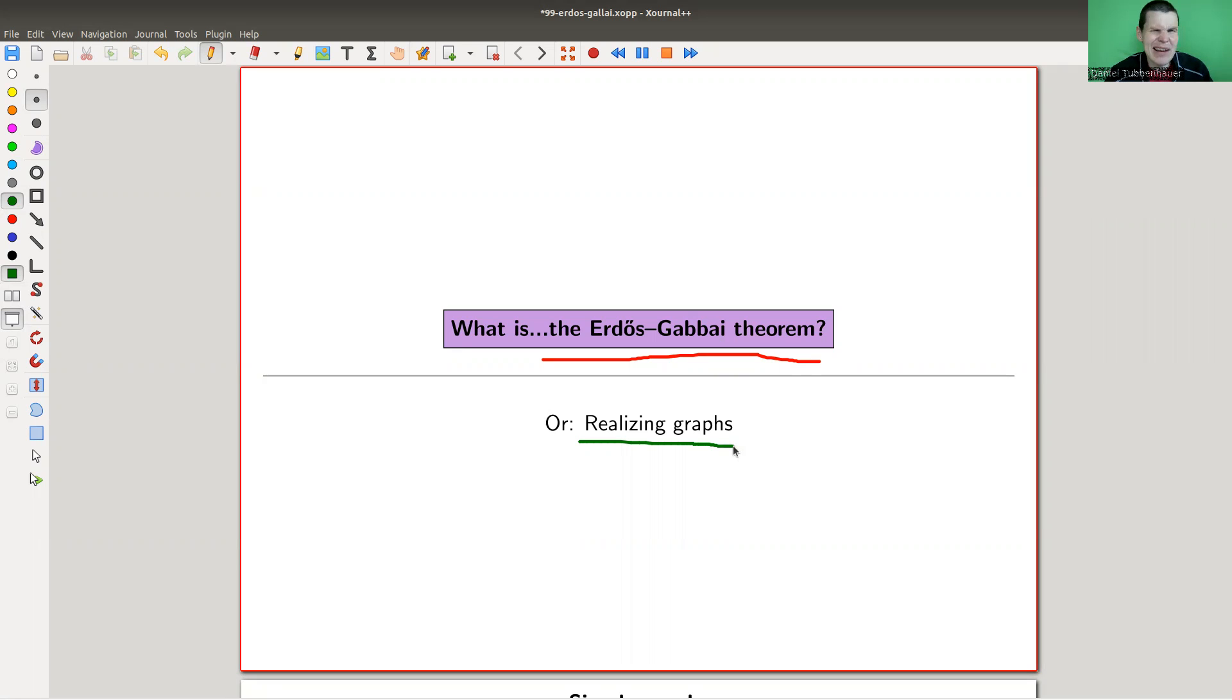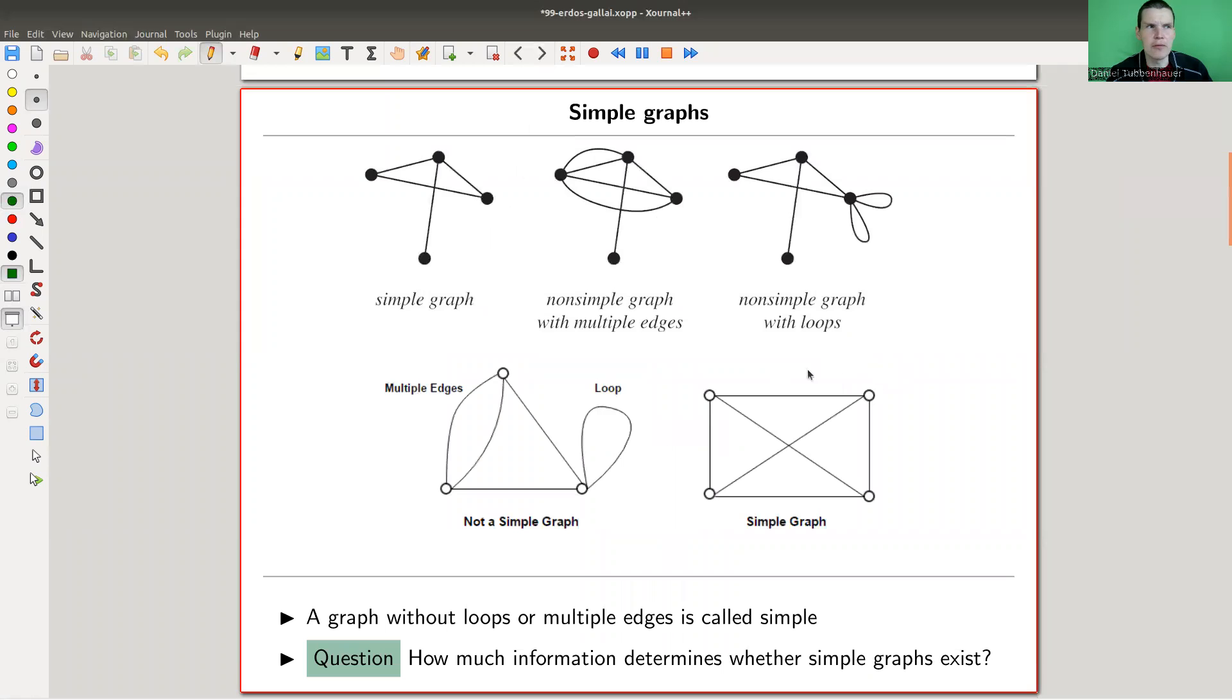It's those types of statements that are a bit surprising. So let's have a look at the setting. Today I'm only going to focus on so-called simple graphs. There are variants of this theorem for other types of graphs, but the simplest case are the simple graphs. So let's focus on them.